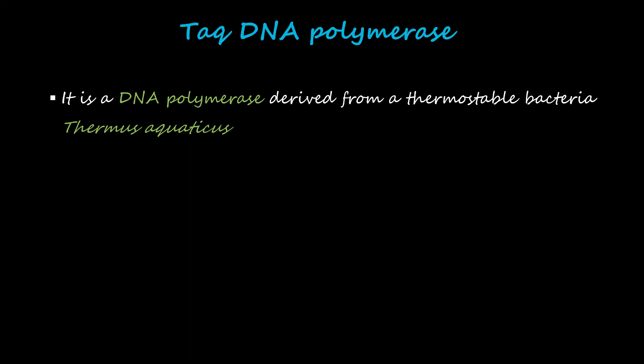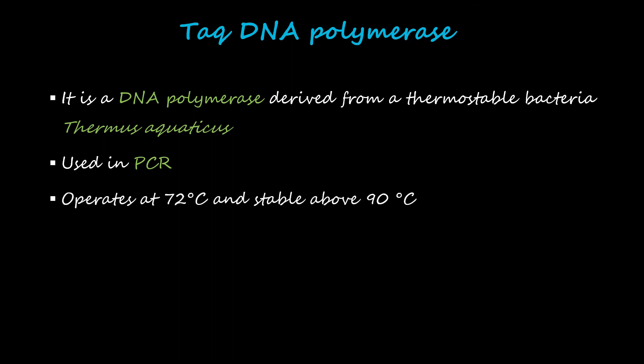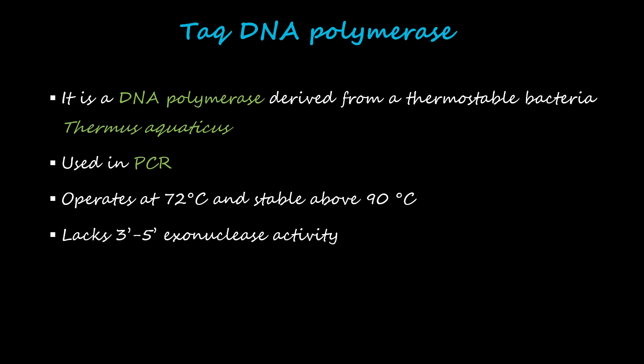Last but not least, Taq DNA polymerase. It is a DNA polymerase derived from the thermostable bacterium Thermus aquaticus. It is the most commonly used enzyme in PCR — polymerase chain reaction — because it operates at 72 degrees Celsius and is also stable above 90 degrees Celsius. Though it has 5' to 3' polymerase activity as well as 5' to 3' exonuclease activity, it lacks 3' to 5' exonuclease activity. Therefore it is unable to correct any mismatched nucleotides.